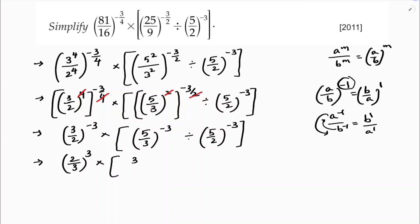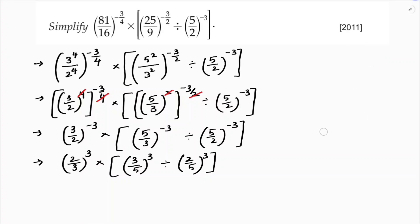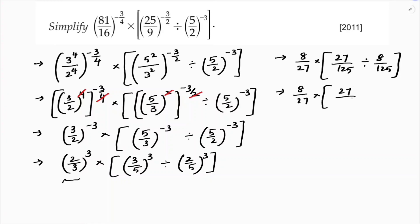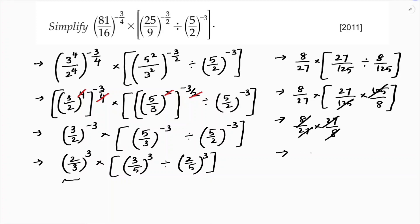So we have (2/3) whole cube into (3/5) whole power 3, divided by (2/5) whole power 3. Calculating: (2/3)^3 is 8/27, into (3/5)^3 is 27/125, divided by (2/5)^3 is 8/125. So 8/27 into 27/125 divided by 8/125 — here 125 and 125 cancel, then 8 and 8 cancel, 27 and 27 cancel. So the answer is 1.